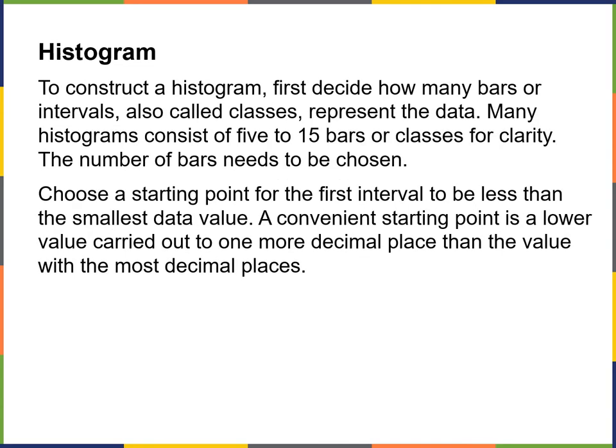To construct a histogram, first we need to decide how many bars or intervals — also called classes — represent the data. Many histograms consist of 5 to 15 bars or classes for clarity. Choose a starting point for the first interval to be less than the smallest data value. A convenient starting point is a lower value carried out to one more decimal place than the value with the most decimal places.